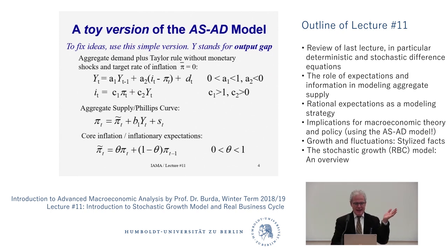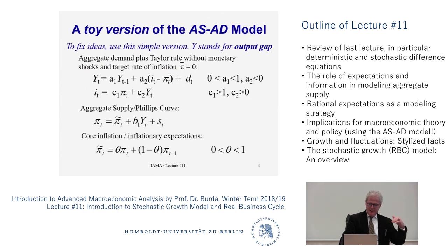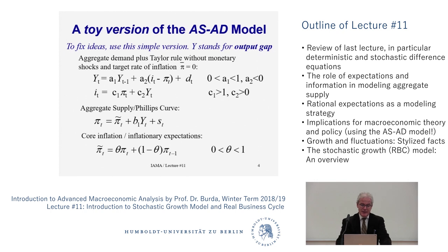That's the demand side — the AD curve. The AS curve basically says that the behavior of inflation is a function of three things: first, what people have expected inflation to be in the past — we call that core inflation or inflationary expectations. Second, the sensitivity of price setting to the output gap: when y_t is positive, the economy is operating above capacity, so firms tend to raise prices and workers with negotiating power ask for higher wages, which get passed on in higher prices. The third part of the aggregate supply story is the supply shock — things that happen conditional on the first two.